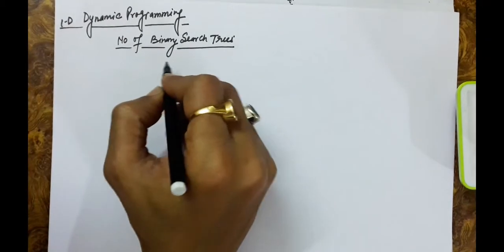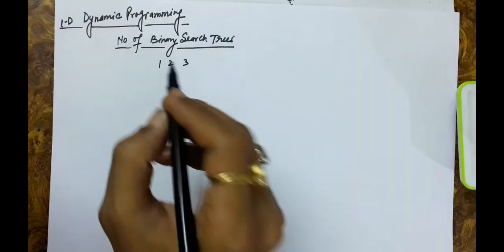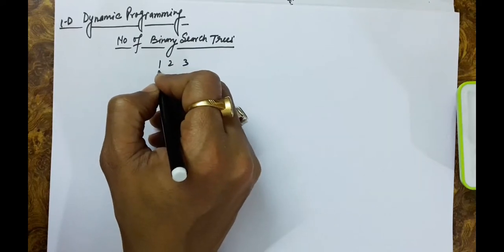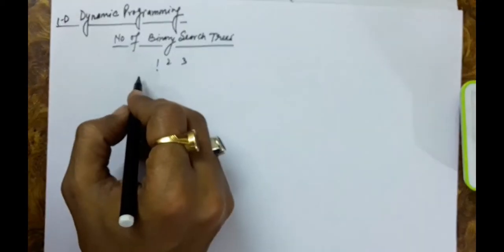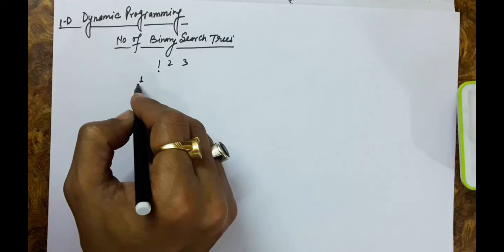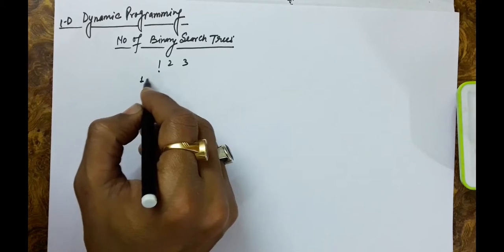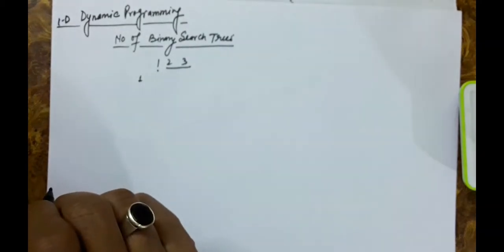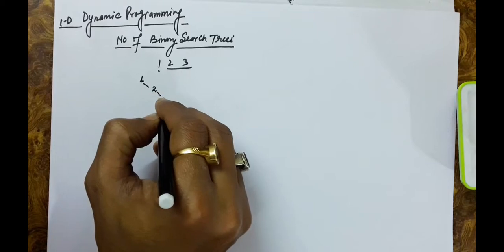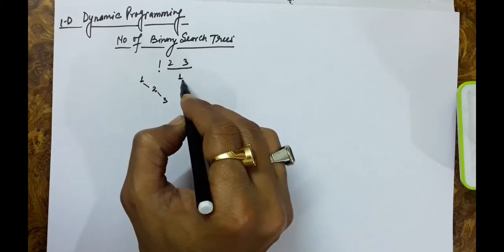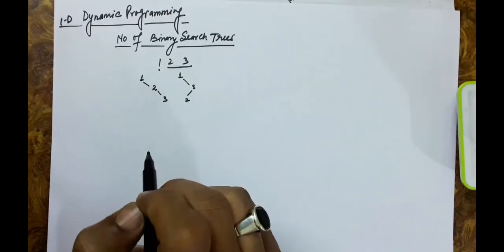In this problem, let's say we have three numbers: 1, 2, and 3. What are the total number of binary search trees possible with these numbers? If we take 1 as a root, there are zero numbers on the left and two numbers (2, 3) on the right. We can form two BSTs: one where 3 is right child of 1 and 2 is right child of 3, or another where 2 is right child and 3 is right child of 2.